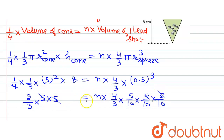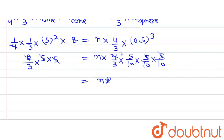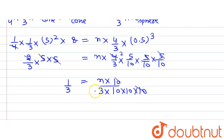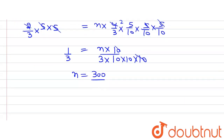The 5s and the 4 cancel out on both sides of the equation. We are left with n × 2 × 5 = 10, divided by 3 × 10 × 10 × 10. After cross-multiplying, n equals 300 divided by 3, which gives us the number of lead shots — that is, 100.